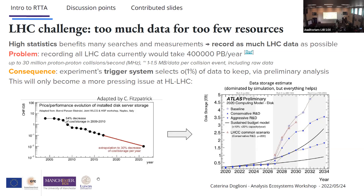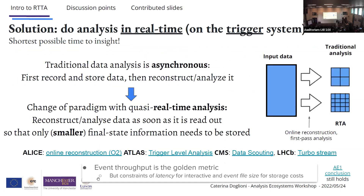These are all becoming more pressing issues for LHC, because we've seen plots from Graham showing that the performance evolution of both disk and CPU is not keeping up with our needs. We're blowing the budget if we record everything. The storage estimates are dominated by simulation, but everything really helps. The solution is that collaborations have started doing analysis in real time.